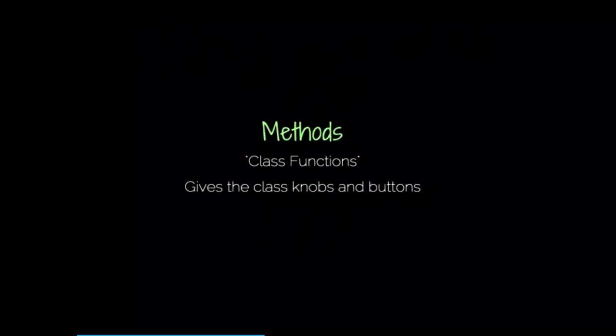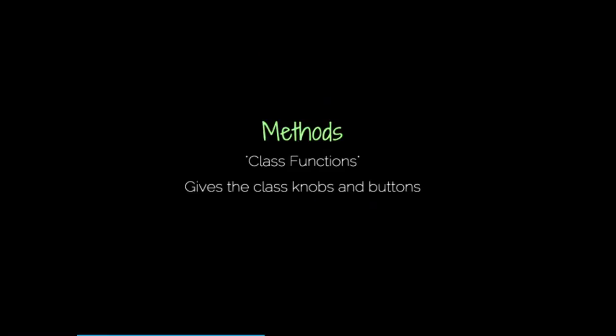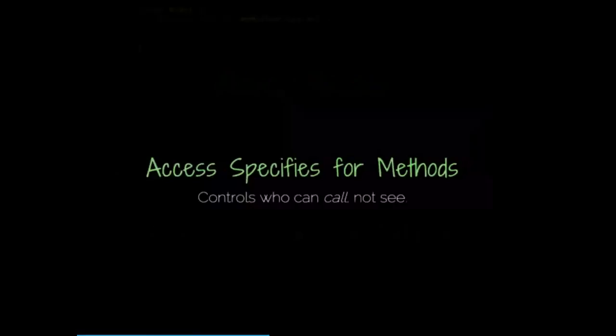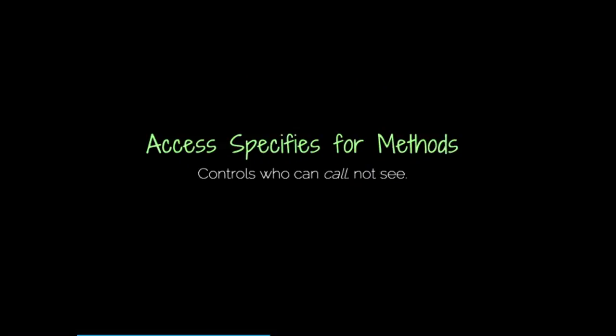So we have our classes and they have stuff in them, but they don't do anything yet. What we have is methods. Methods make our robots do stuff — it's also called a class function. It gives your class some knobs and buttons, some actionable thing you can make it do. To define methods, you define them like you would any other function, but you do it within the class curly braces: you have a function, a function name, parameters, and a body. There are also access specifiers on methods, but they control who can call, not who can see. A public method can be called by everyone. Private methods can only be invoked within the same class — not even child classes. Protected methods can only be used by related classes.